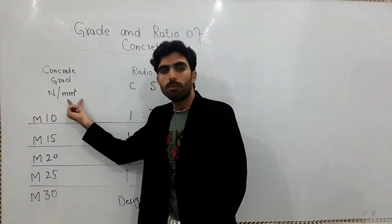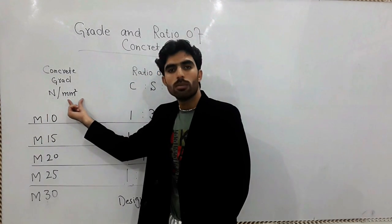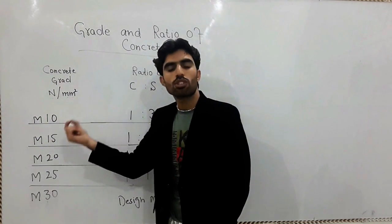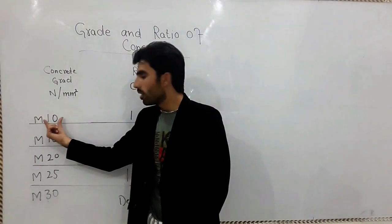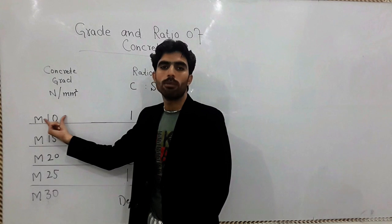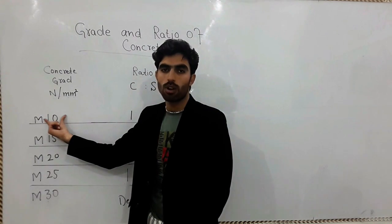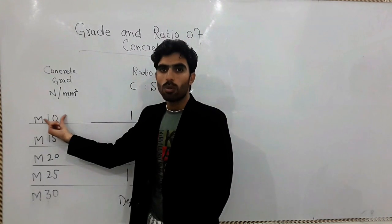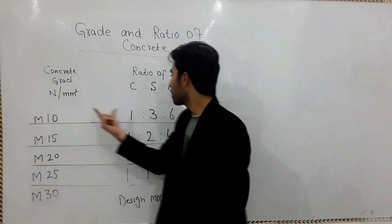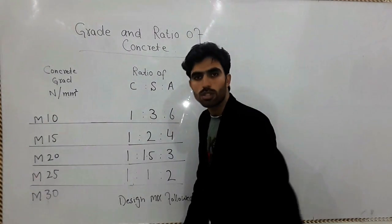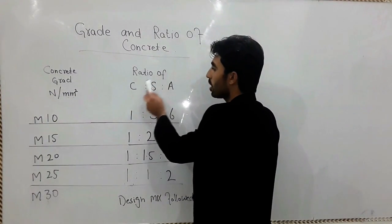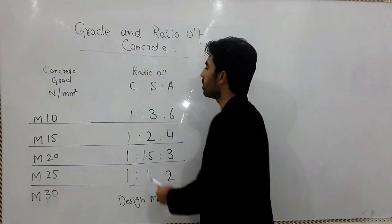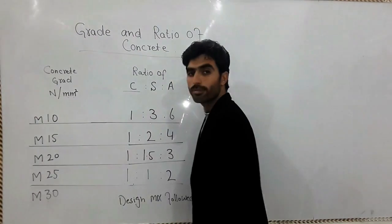This is the compressive strength of the concrete. So when you want to gain 10 Newton per mm square compressive strength from concrete, what kind of ratio do you need to use there? For that I have discussed with you now - ratio of CSA. What is C? C means cement, S means sand, A means aggregate.